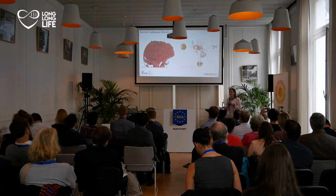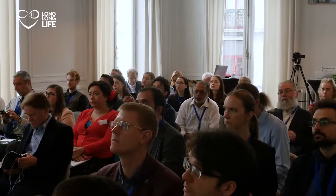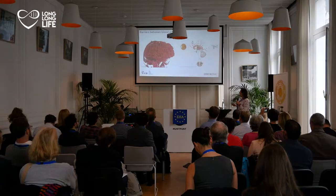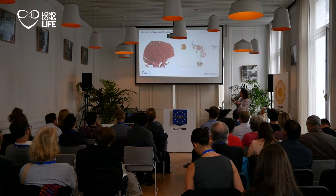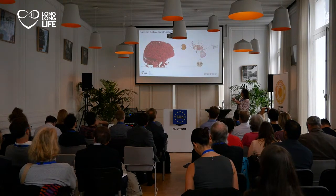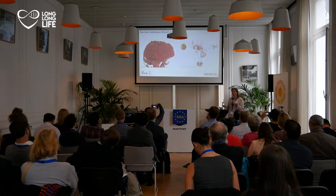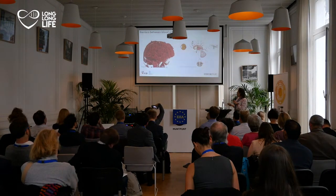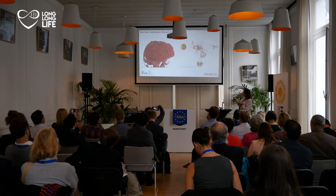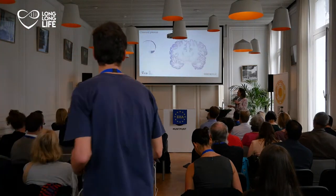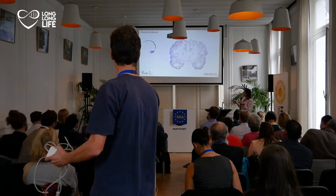However, there are also other brain barriers which are much less studied. There are barriers in the eye, at the level of the spinal cord, and at the level of the arachnoid barrier. The one that we are looking into is called the blood-CSF barrier.